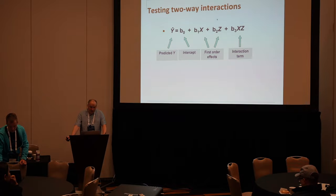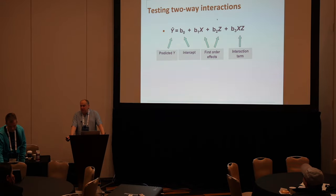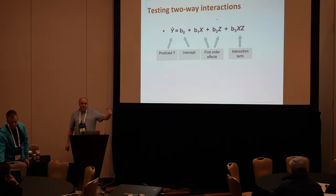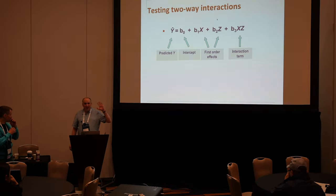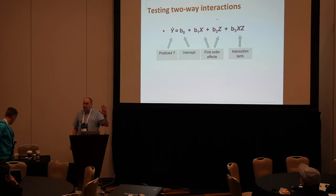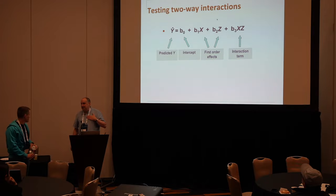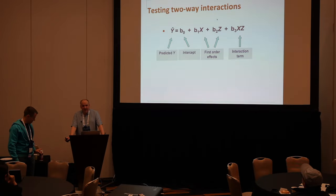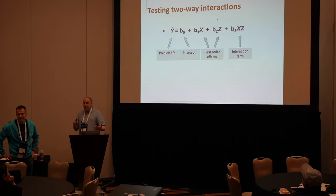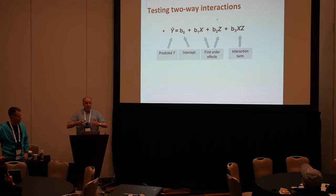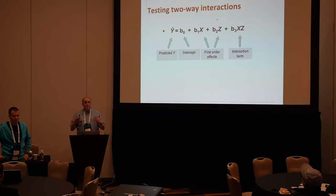We'll start by talking about two-way interactions. Most of you, probably all of you, are already familiar with the standard equation for testing two-way interactions: we have an independent variable X, a moderating variable Z — being British I normally call this Z, so forgive me if I slip — and the interaction term which is X multiplied by Z. If that interaction term is non-zero and statistically significant, that is an indication that there is moderation.